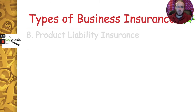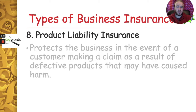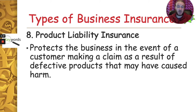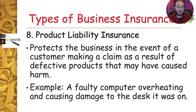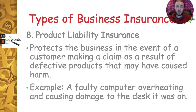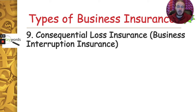Product liability insurance protects the business in the event of a customer making a claim because a product they made was defective or faulty and caused harm to the consumer. For example, if a faulty computer overheated and caused damage to a desk, the customer can claim against the business for damages to their personal property as a result of the faulty product, and product liability insurance will cover that loss.